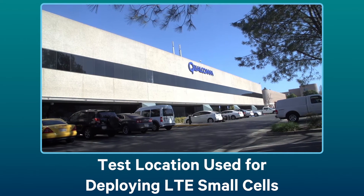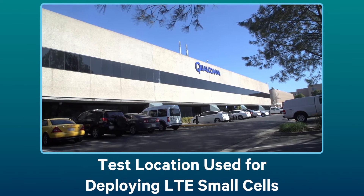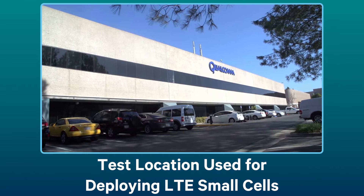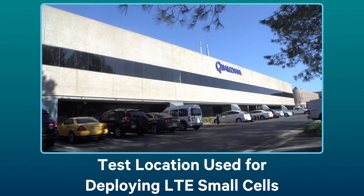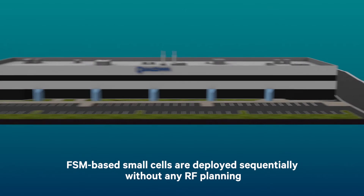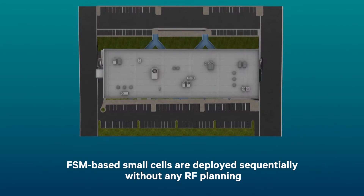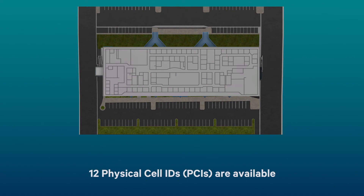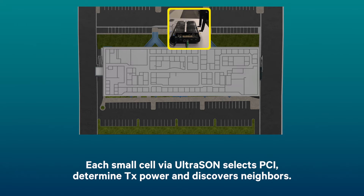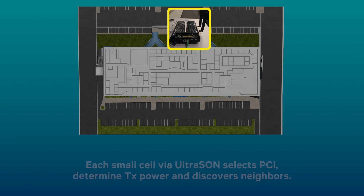Nine small cells are deployed sequentially without RF planning inside a Qualcomm building in San Diego. A total of 12 PCIs are available. Ultrasound-powered small cells select their PCIs, determine transmit power, and discover their neighbors.